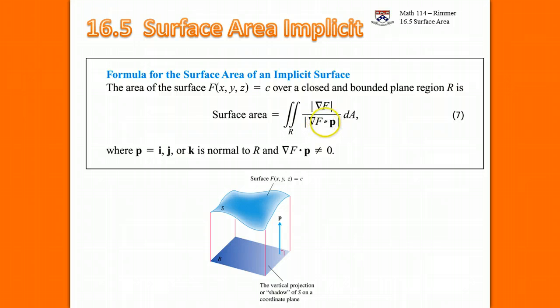And underneath that, so that's going to be, these bars here are absolute value bars because what's inside is a number. What's inside of here is a vector, so these bars are magnitude bars. And you can find the surface area by doing the double integral over the region R. It doesn't have to be rectangular of that fraction.